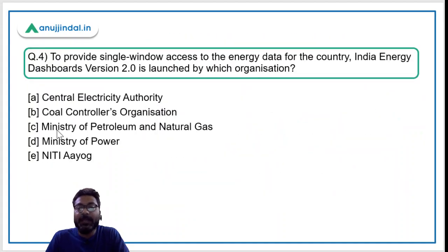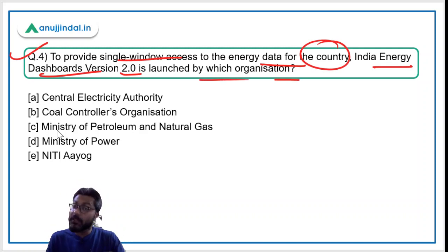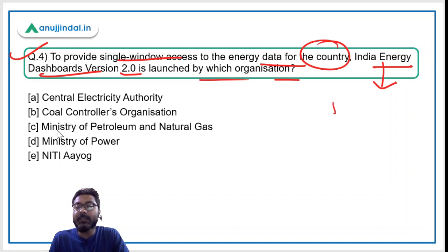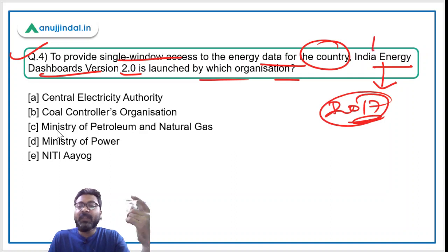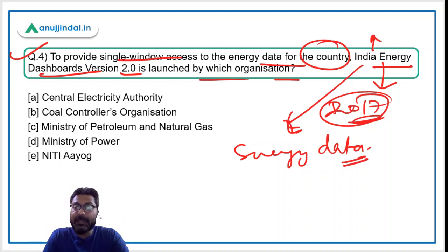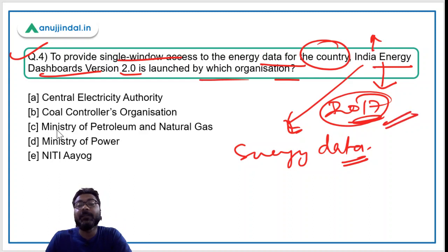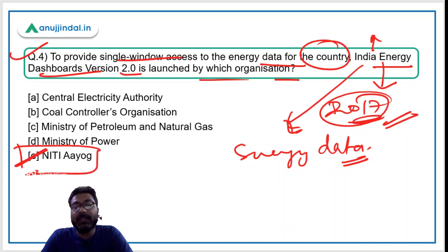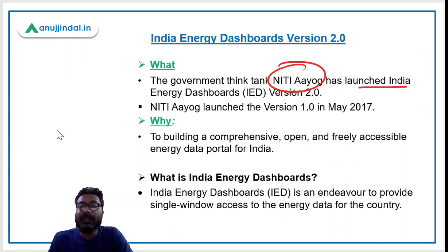Question number four: To provide single window access to energy data for the country, India Energy Dashboard version 2.0 was launched by which organization? Remember, the India Energy Dashboard version 1.0 was first launched in the year 2017. It provides all energy-related data — what is produced in the country and from which sources. The correct answer is NITI Aayog, which has launched the second version.